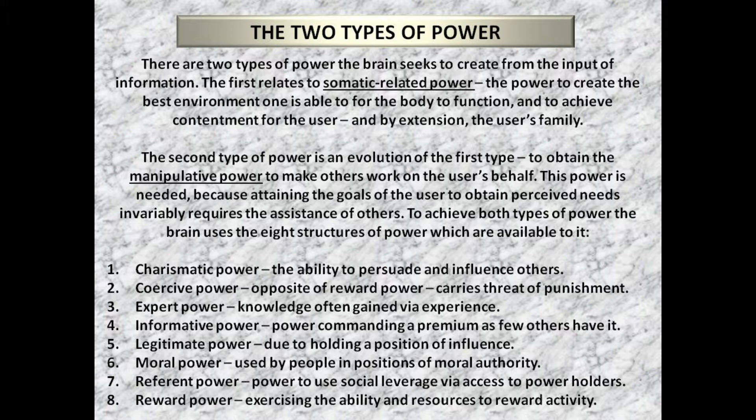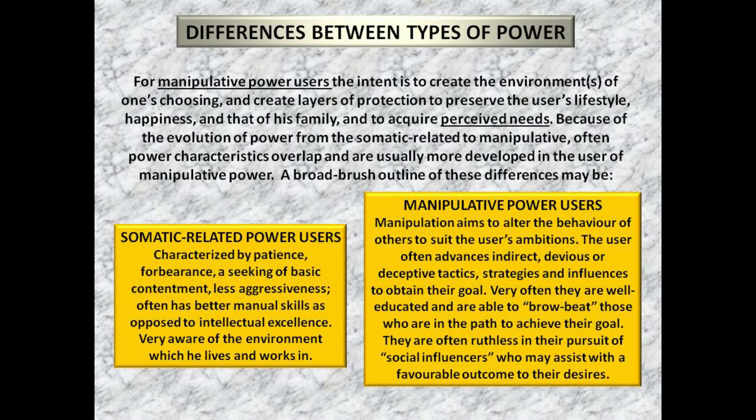The eight structures of power are: one, charismatic power — the ability to persuade and influence others; two, coercive power — the opposite of reward power, carrying the threat of punishment; three, expert power — knowledge often gained via experience; four, informative power — power commanding a premium as few others have it; five, legitimate power — due to holding a position of influence; six, moral power — used by people in positions of moral authority; seven, referent power — the power to use social leverage via access to power holders; and eight, reward power — exercising the ability and resources to reward activity.